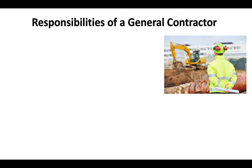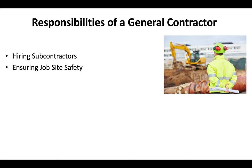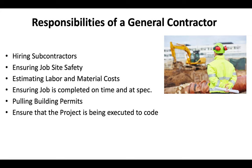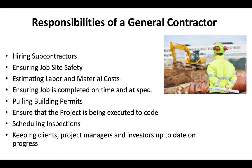The responsibilities of a General Contractor — whether it's a General B or General A — are typically the same. It includes hiring subcontractors, ensuring job site safety, estimating labor and material costs, ensuring jobs are completed on time and at spec, pulling building permits, ensuring that projects are executed up to code, scheduling inspections, and keeping clients, project managers, and investors up to date on progress. General Contractors are part business people, part project managers, and of course they have the specialized trade skill knowledge.